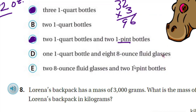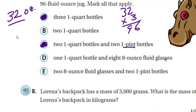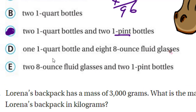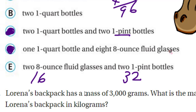Option D: one quart bottle and eight 8-ounce fluid glasses. Eight times eight is 64 ounces, plus one quart (32 ounces) gives us 96 again — another winner! Option E: two 8-ounce fluid glasses and two one-pint bottles. 16 ounces in one pint times 2 is 32, plus 8 times 2 is 16 — only 48 total. You're not even going to come close, so E is out.